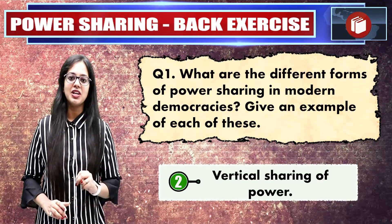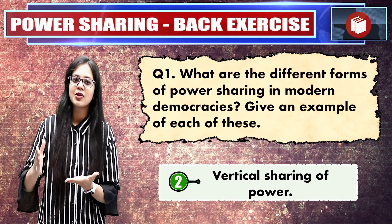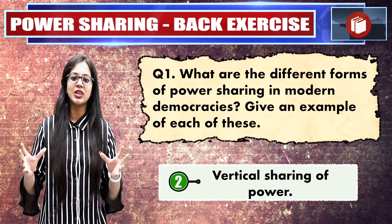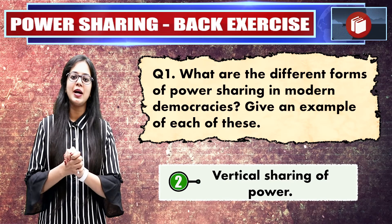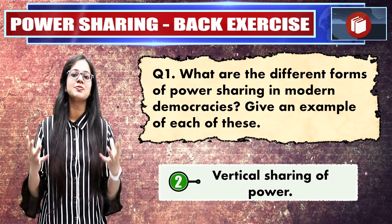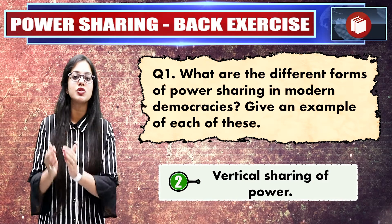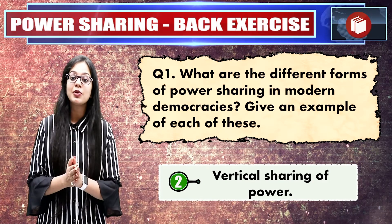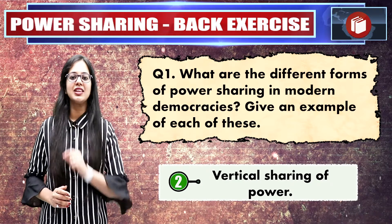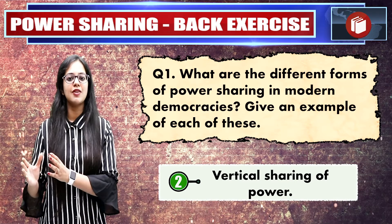The second form is called the vertical distribution of power, also known as the federal distribution of power. The objective is to share power across different levels of government — higher levels and lower levels. In India's case, India is a federal country, so power is shared vertically between the central government and the state governments.